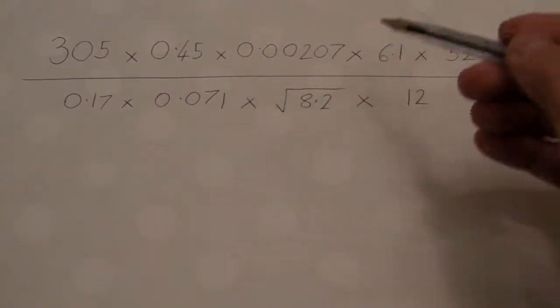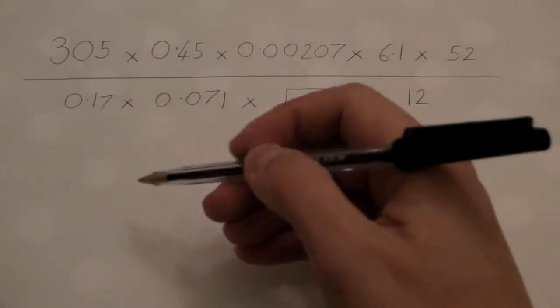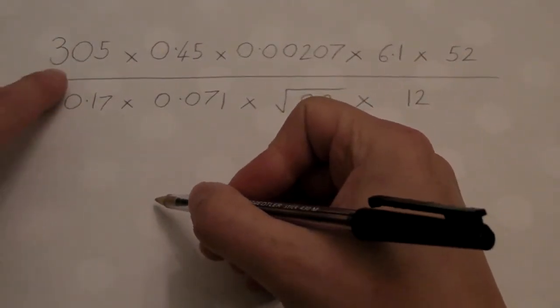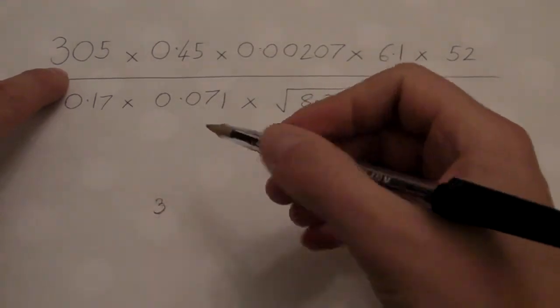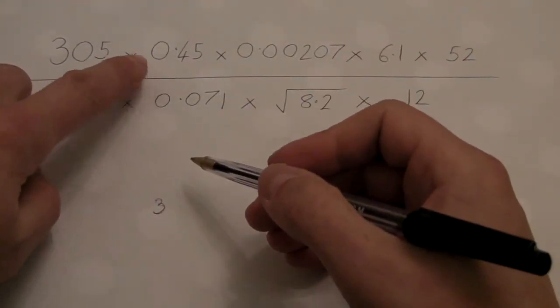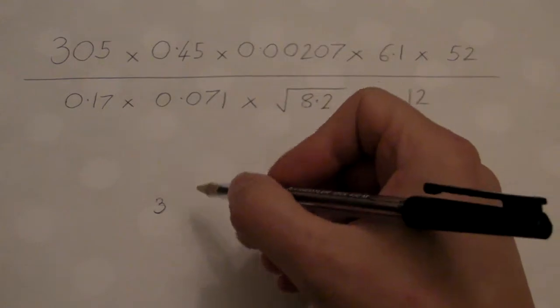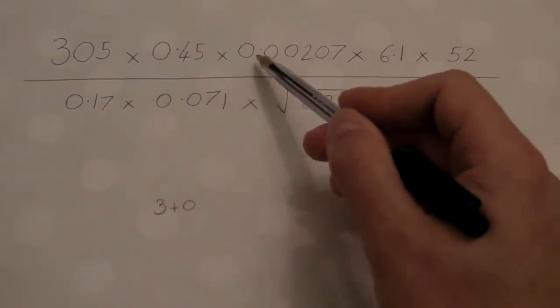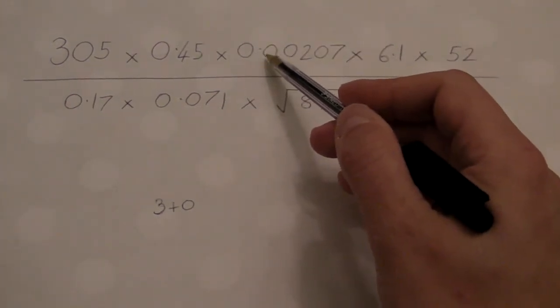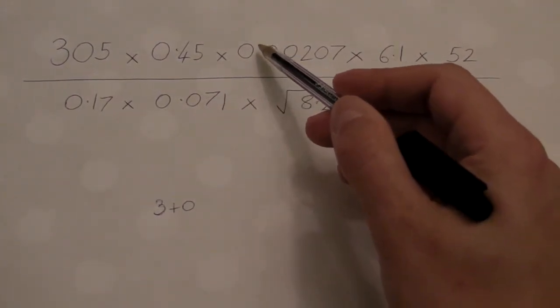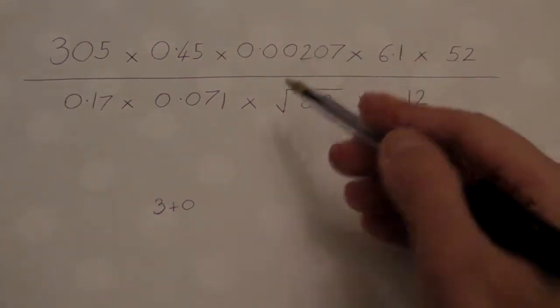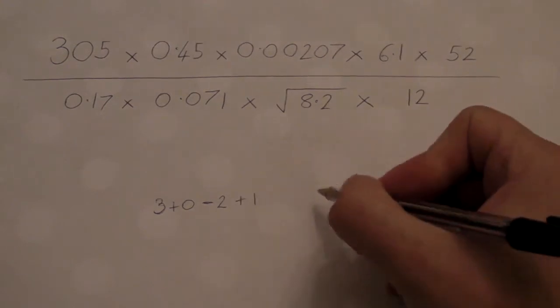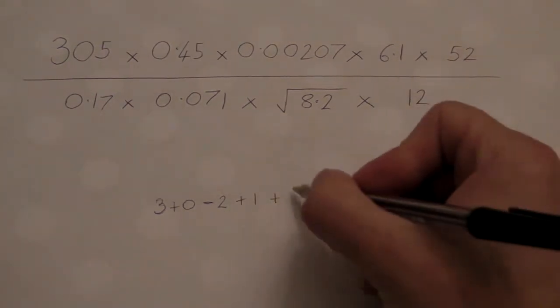Right, before we do that, let's work out how many digits we're expecting in our answer. And we do that by counting the number of digits in the top line. That's a three-digit number. Remember, we're looking at the number of digits before the decimal point. That hasn't got any, so that's zero. This is a negative number because there are two zeros after the decimal point before you get to the meat. That's a minus 2, that's a plus 1, and that's a plus 2.